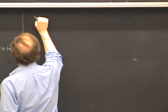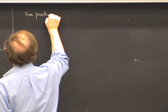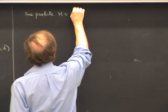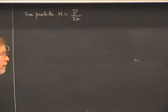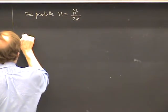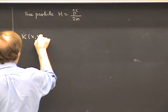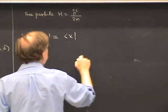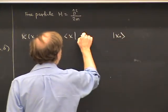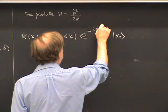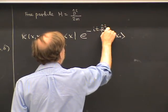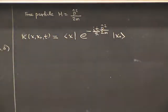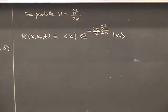For the case of the free particle, the Hamiltonian is P-hat squared over 2M. The propagator K(X, X₀, T) is equal to the matrix element between ⟨X| and |X₀⟩ of the time evolution operator, which is e to the minus iT times P-hat squared over 2M divided by ℏ — it's the position-space matrix element of e to the iP squared.